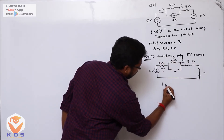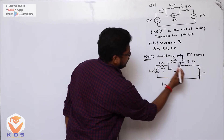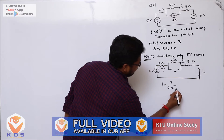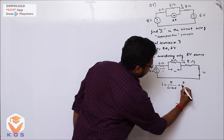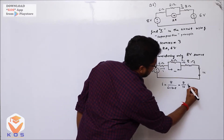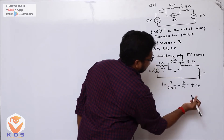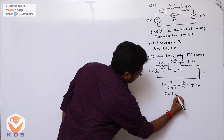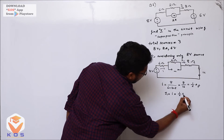The current I1 equals total voltage divided by total resistance: 8 divided by (6 plus 2 plus 8), which is 8 divided by 16. That gives I1 equal to one-half ampere, or 0.5A.